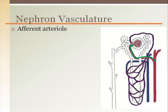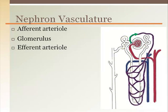The afferent arteriole branches off the interlobular artery and leads to the glomerulus, a tangled capillary bed within the Bowman's capsule. The glomerulus is where water and solutes are filtered out of the blood and into the Bowman's capsule. The efferent arteriole takes blood away from the Bowman's capsule. The blood in the efferent arteriole is much thicker and sludge-like, conceptually speaking, since it has significantly less water in it.